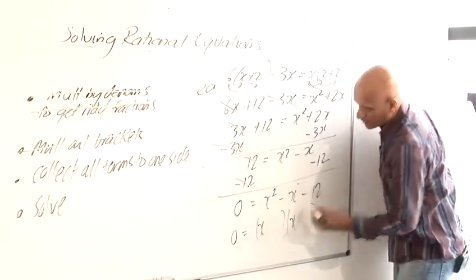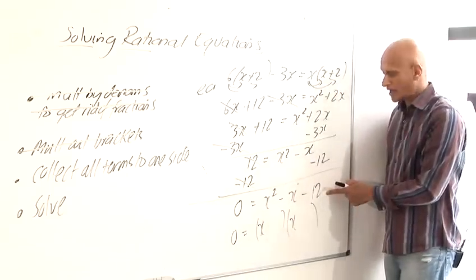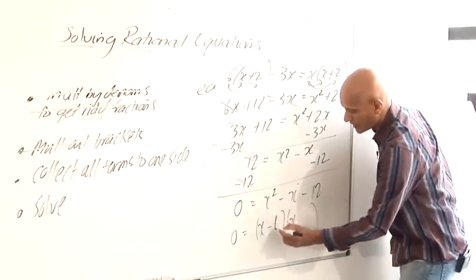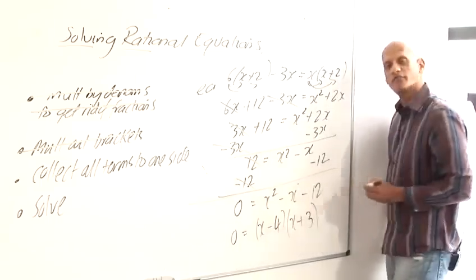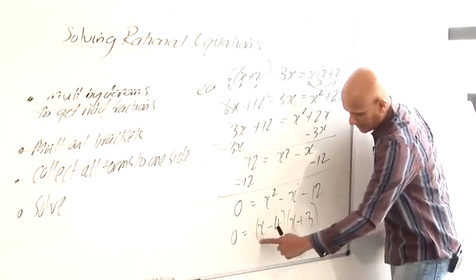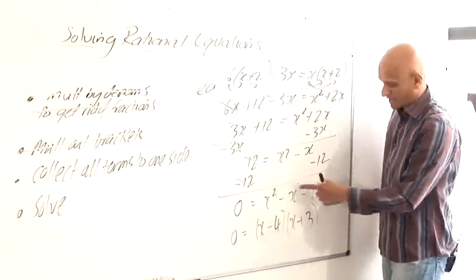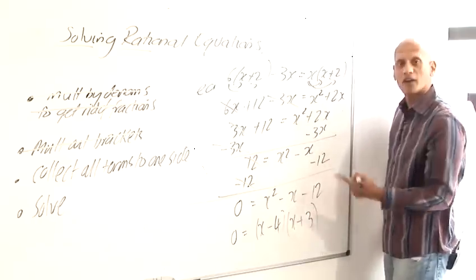I'm going to have an x at the front of each bracket to give me x squared. To get minus 12, maybe I could try minus 4 times 3. So minus 4 times plus 3 would give me minus 12. And let's just check that works. x squared plus 3x minus 4x. 3x minus 4x is minus x, which is correct. And then minus 12. That's fine.